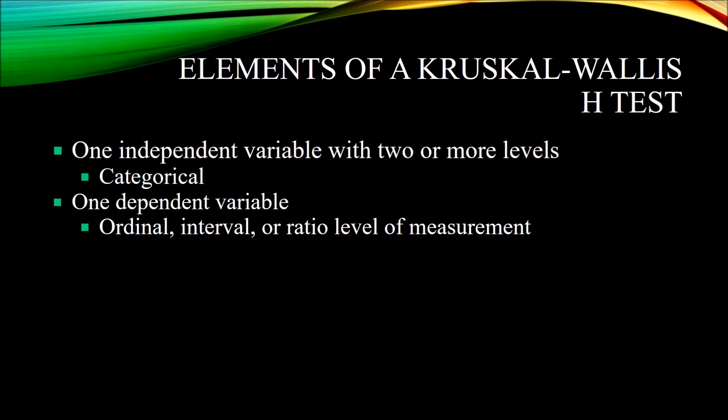Now let's take a look at the elements of the Kruskal-Wallis H-Test. Not surprisingly, the elements are going to look fairly similar to the elements of a one-way ANOVA. You have one independent variable with two or more levels, and this independent variable is categorical. If we have one independent variable with just two levels, we would use a Mann-Whitney U-Test, and the result of that test is going to be the same as the result of a Kruskal-Wallis H-Test when you just have two levels.